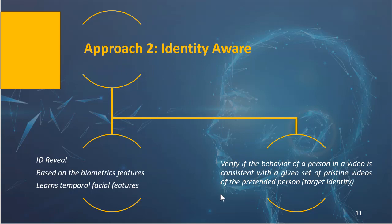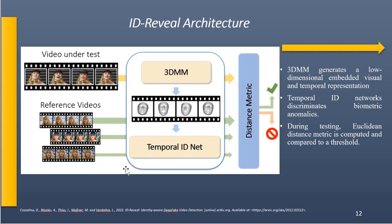Another approach is the identity-aware approach, which determines whether the person in the video is really who they are pretending to be. One of the best methods in this category is the ID-Reveal technique introduced by Cozzolino et al., where temporal facial features are learned to capture how a specific person moves while talking. It generates a distance metric compared with a threshold to determine identity. A key advantage is that only real videos of the target person are needed for training — no fake videos are required.